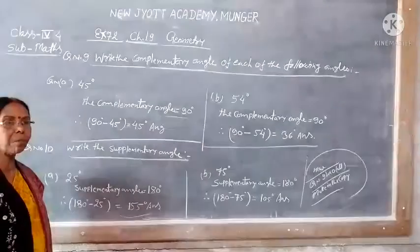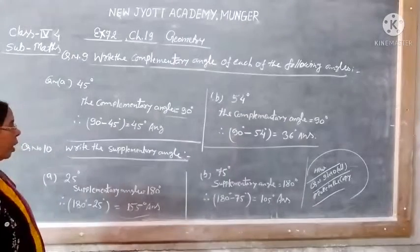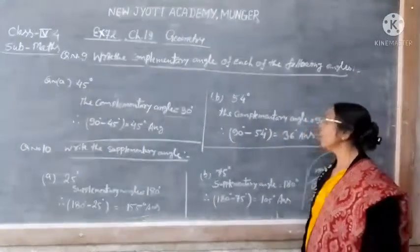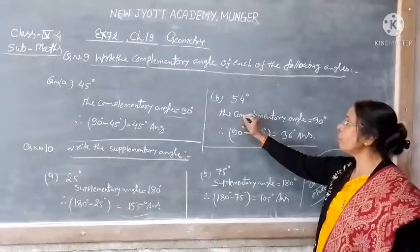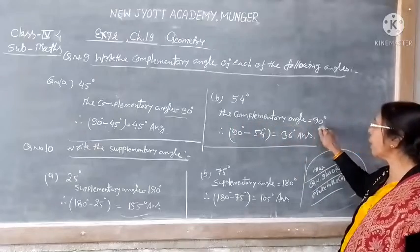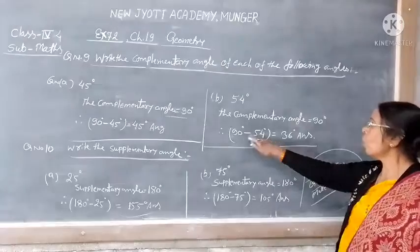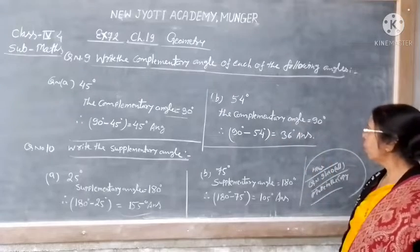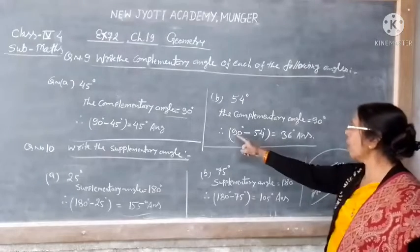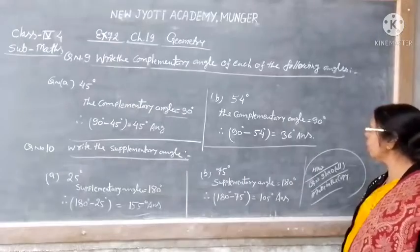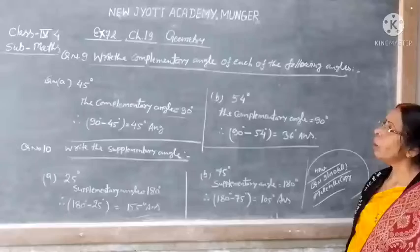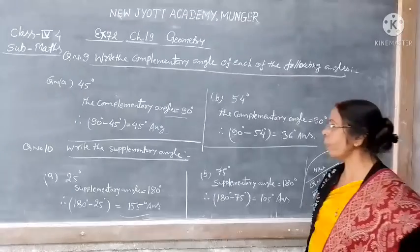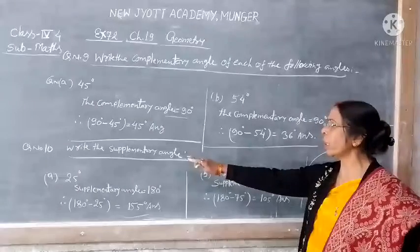This question you will be able to do as homework. Now, question number 10: the complementary angle is 90 degrees and the supplementary angle is 180 degrees. 180 degrees is called the supplementary angle.